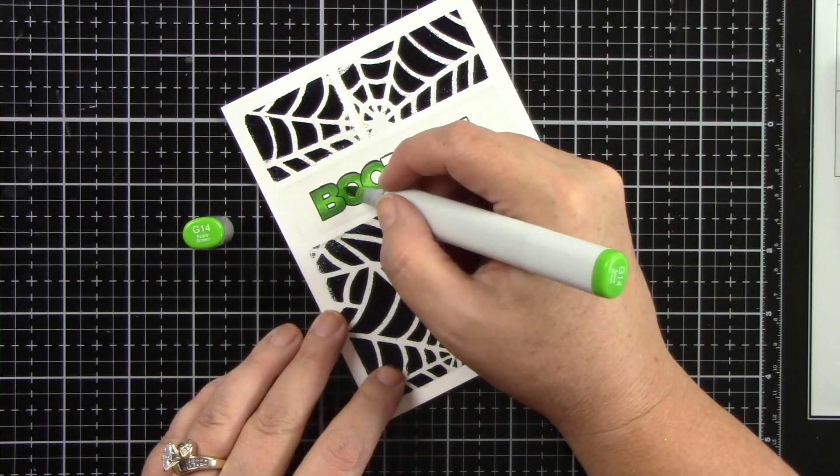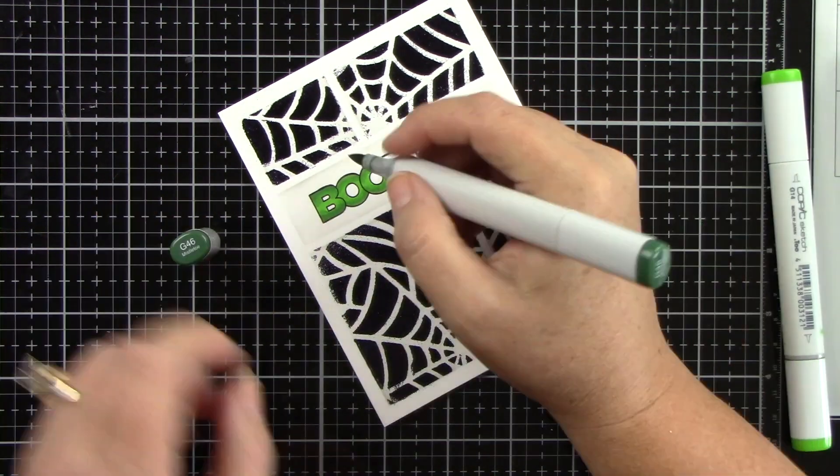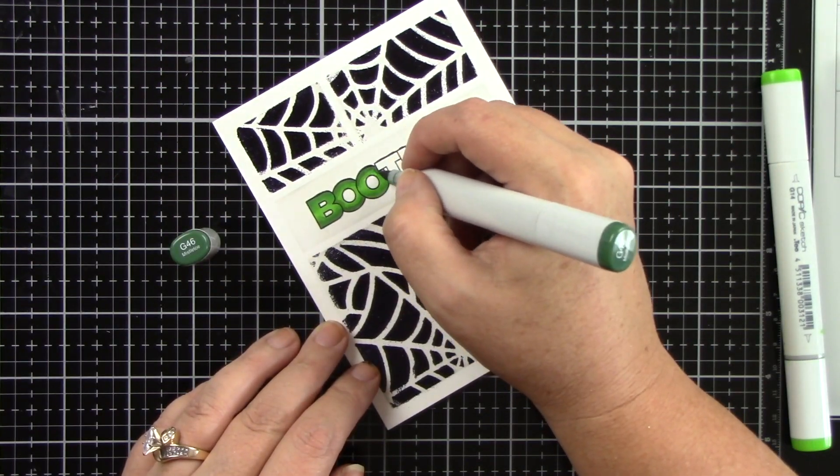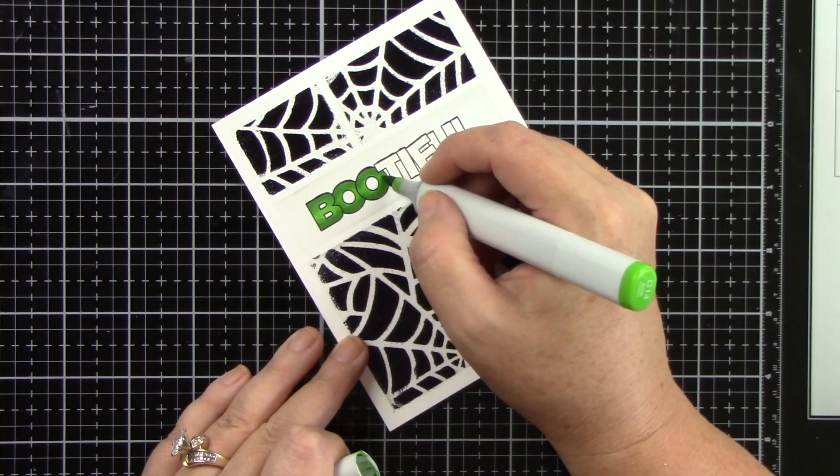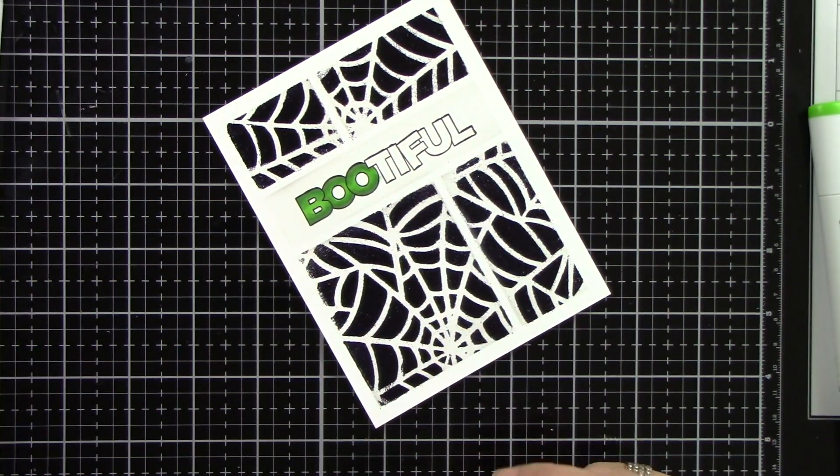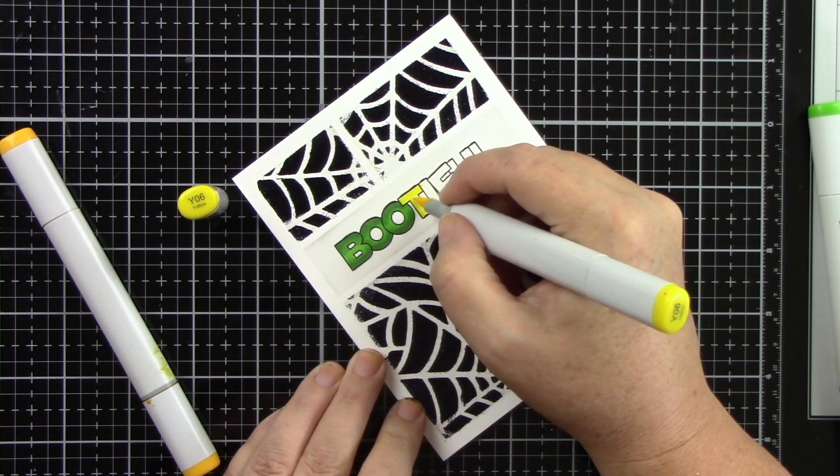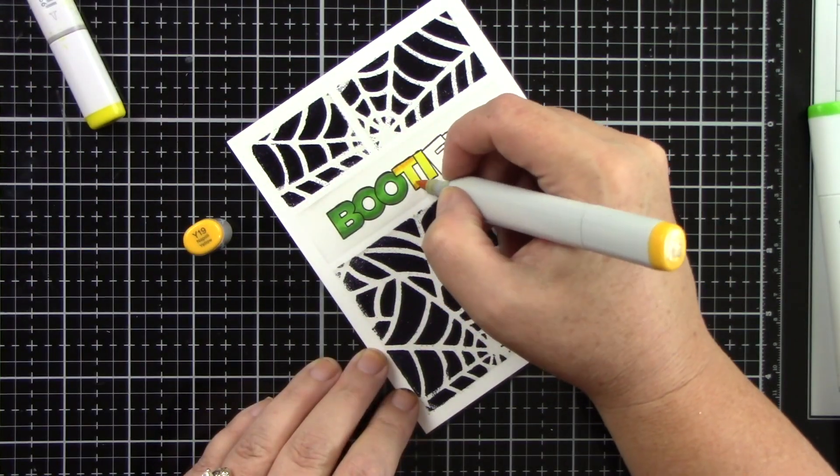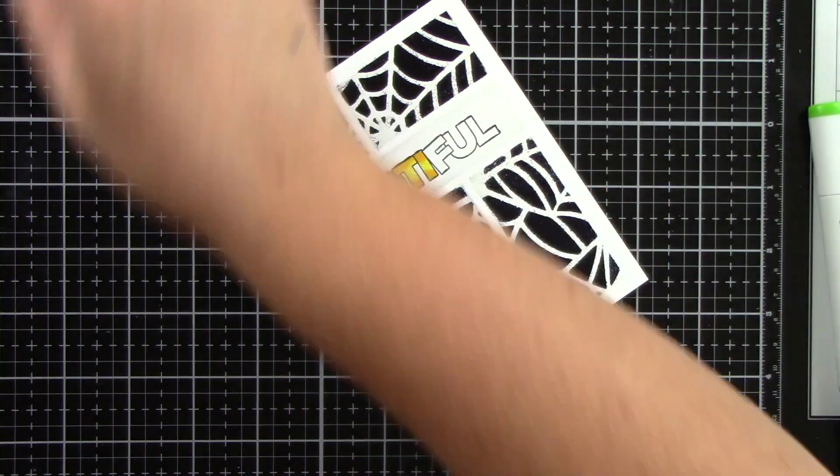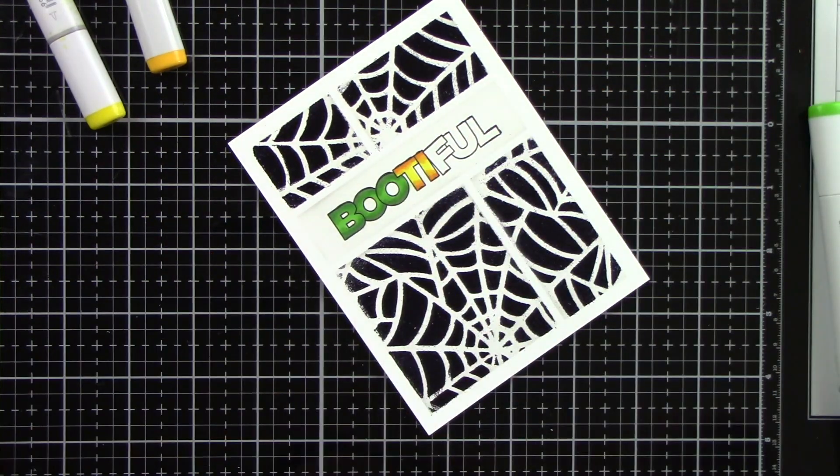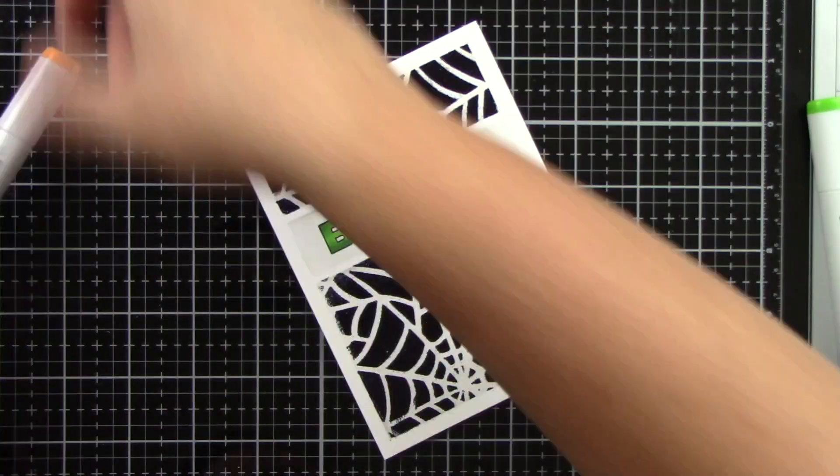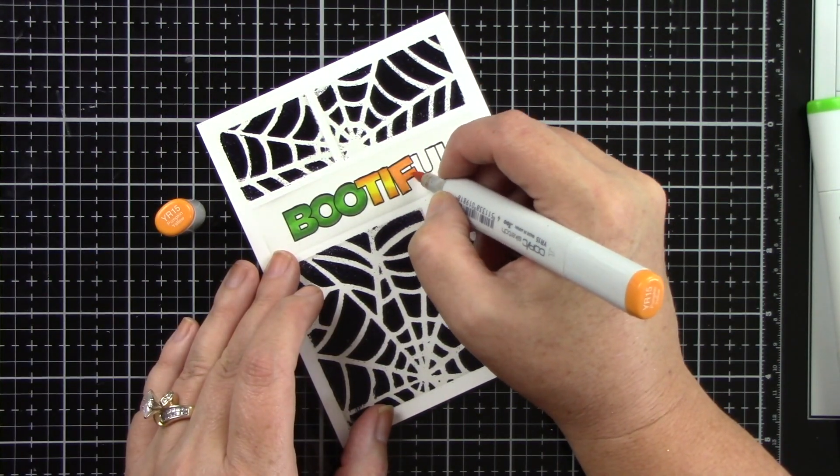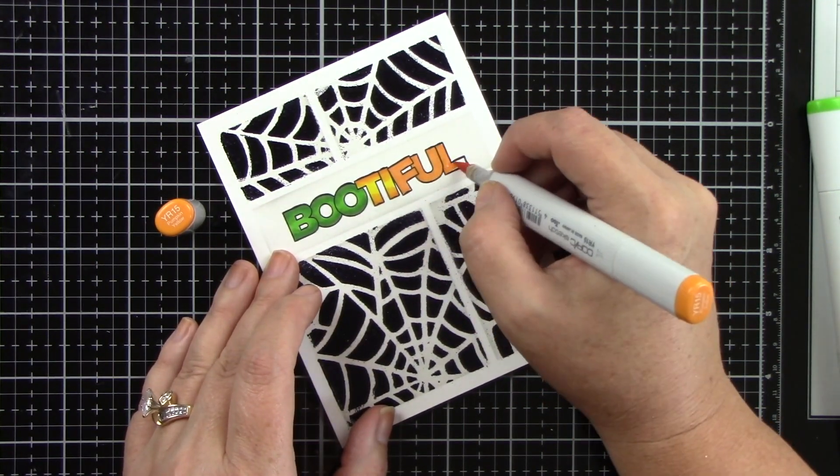I'm using some Copic markers. I'm using G07, 14, 46, and 29 for the green. I will be using the yellow Y19 and 09, and then the orange YR15, 16, and 18. I just think this is a super cute sentiment, and I don't use open sentiments as much as I would like. I think sometimes I forget that I can color them in, so I almost avoid them. So I'm glad I didn't, because this is super cute.